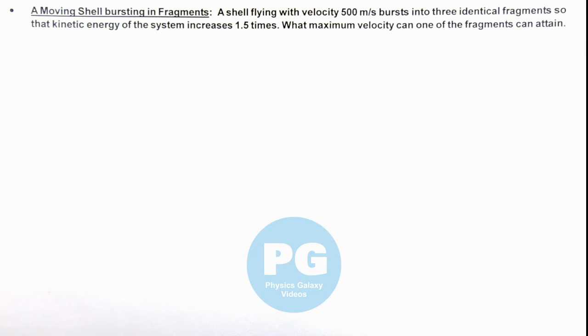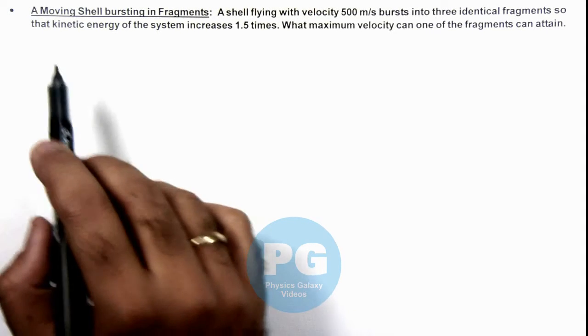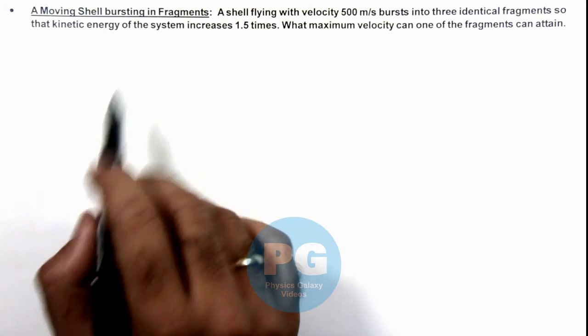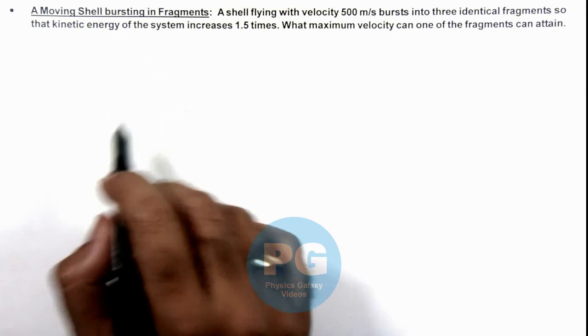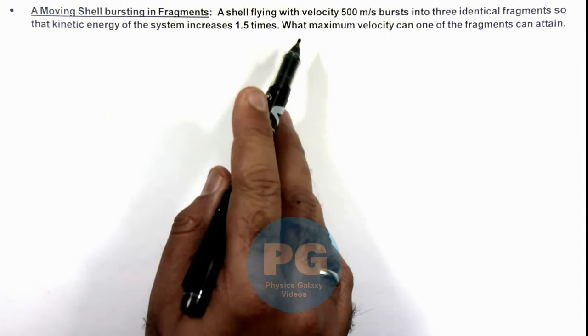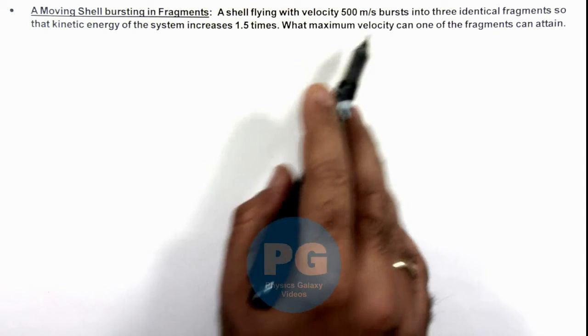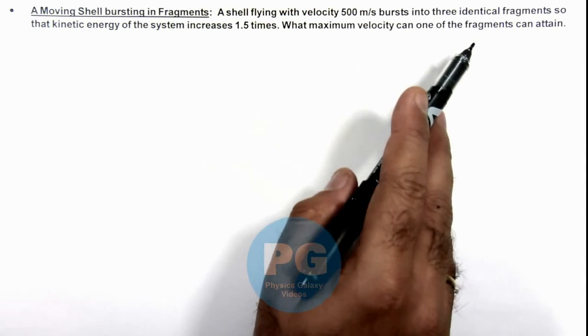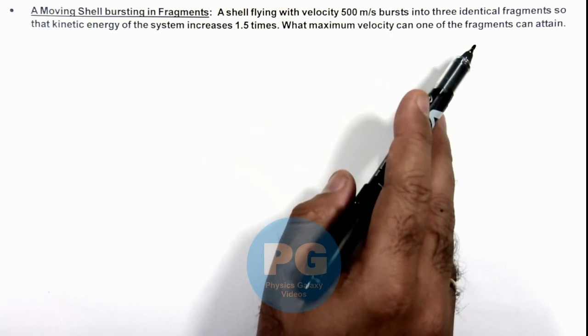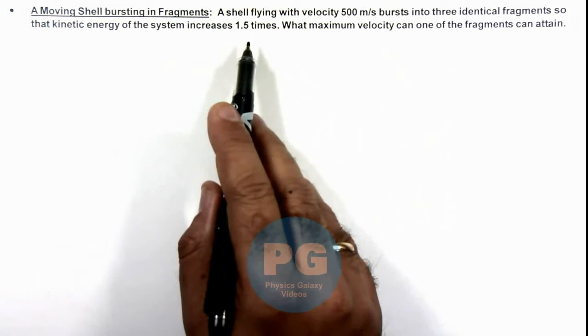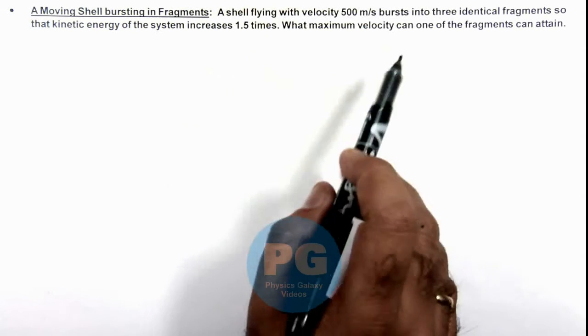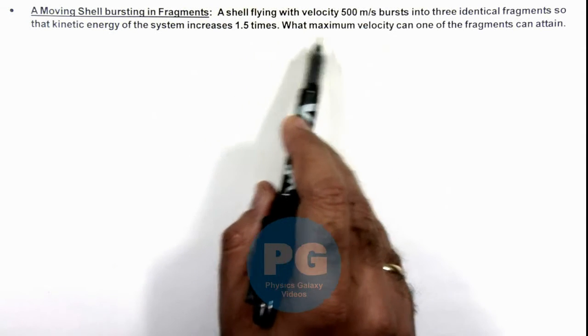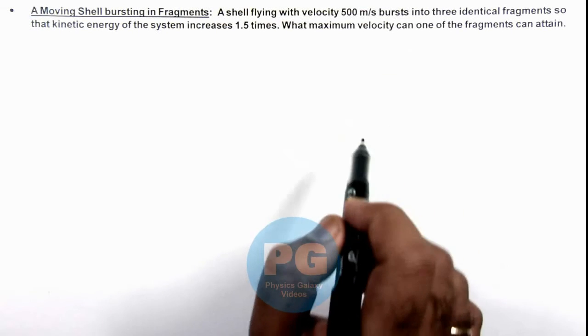In this illustration, we'll be discussing a moving shell bursting in fragments. We are given that a shell flying with a velocity 500 meters per second bursts into 3 identical fragments, so that kinetic energy of the system increases 1.5 times. Here we are required to find what maximum velocity one of the fragments can attain.